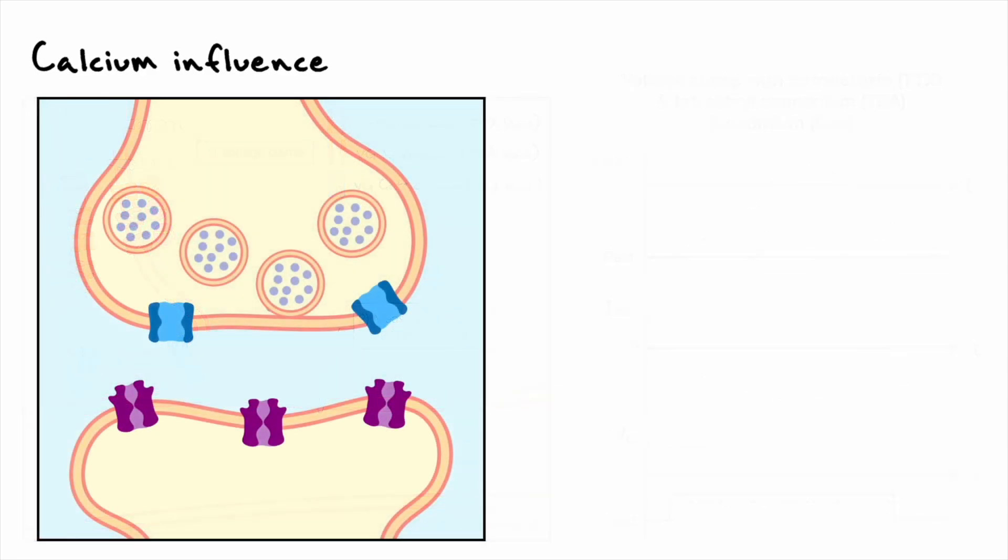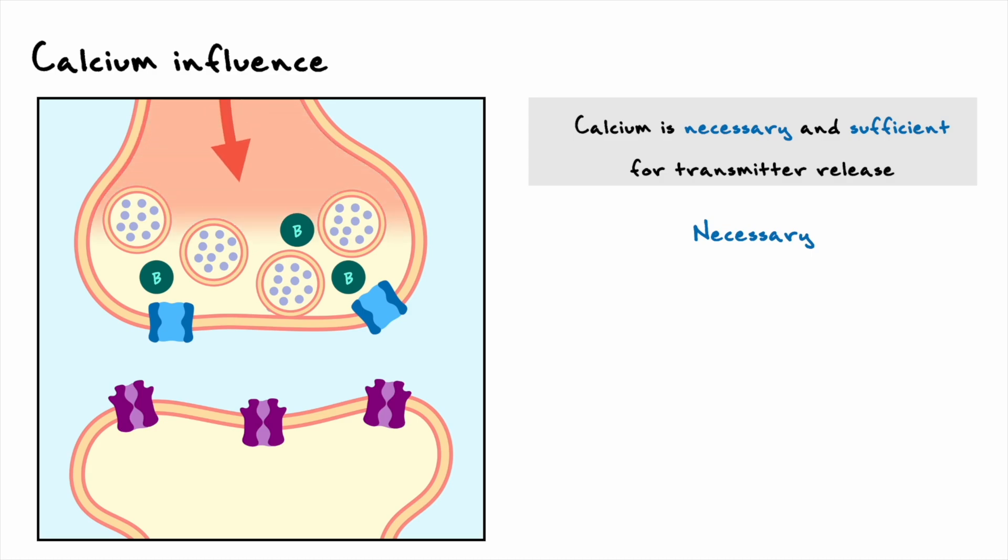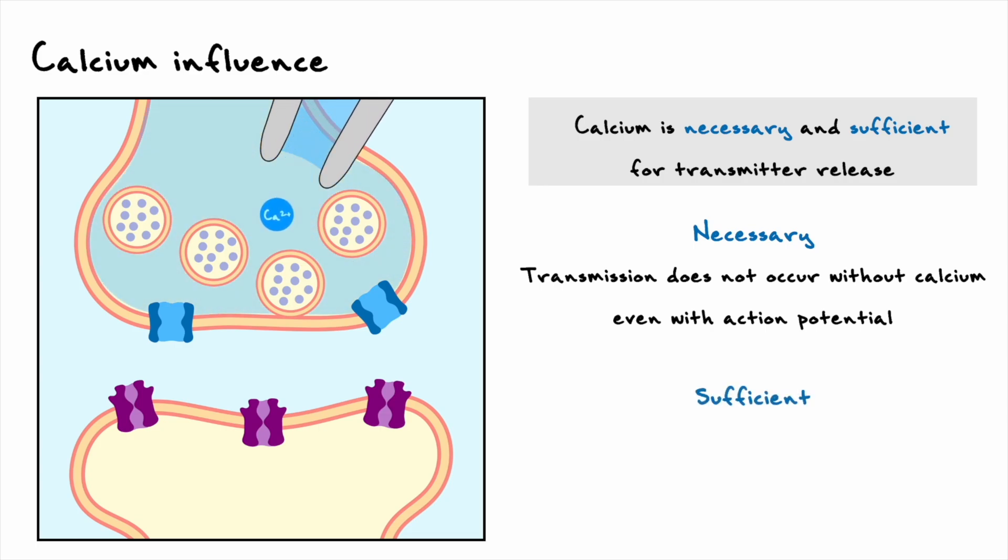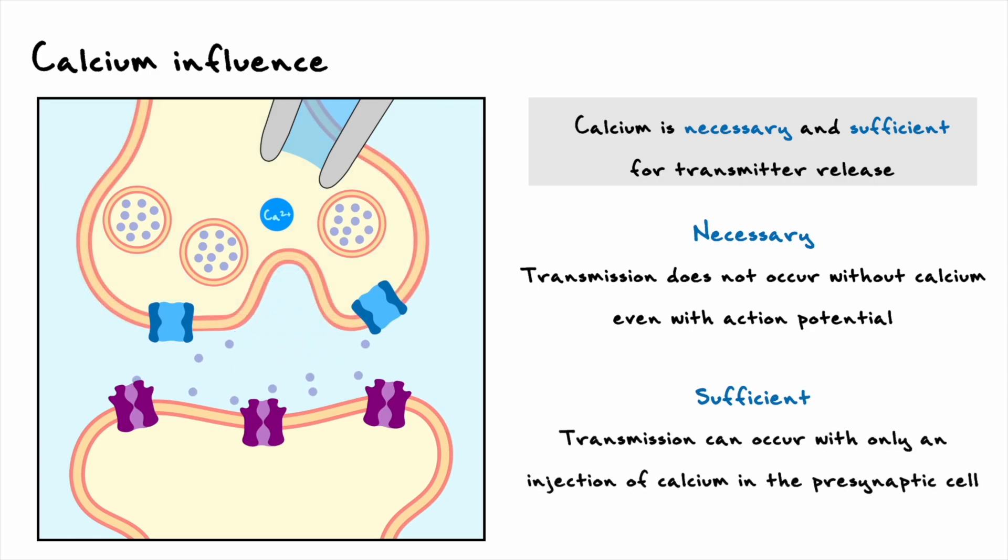In summary, calcium is often said to be necessary and sufficient for transmitter release. The necessity comes from the fact that if one adds calcium buffers in the presynaptic terminal that inactivate calcium, then even when the action potential depolarizes the terminal and calcium enters the terminal, the buffers will prevent calcium from causing the release of transmitters and thus preventing signal transmission. The sufficiency comes from the fact that if calcium is injected in the presynaptic cell, it can trigger the release of neurotransmitters even without the input of an action potential.